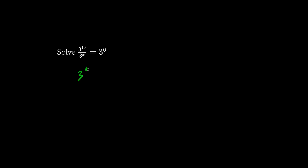When we have the same base, we subtract the exponents. The bases are the same, so we equate the exponents. So x is equal to 10 minus 6, which is 4.